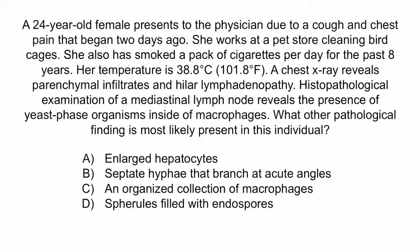A is a reference to hepatomegaly, which can be seen in patients with disseminated histoplasmosis. However, this patient has a relatively healthy immune system, so it's unlikely that the fungus has disseminated, making hepatomegaly unlikely — so A is incorrect. B is a reference to aspergillus, which is a monomorphic fungus that forms septate hyphae branching at acute angles. It's unlikely to cause pneumonia in an otherwise healthy individual; it's more typically associated with AIDS or severe immunocompromise and presents with hemoptysis and pleuritic chest pain — so B is incorrect. D is a reference to coccidioidomycosis, which is associated with inhalation of spores in a desert environment, not bird droppings — so D is incorrect. The correct answer is C: an organized collection of macrophages.